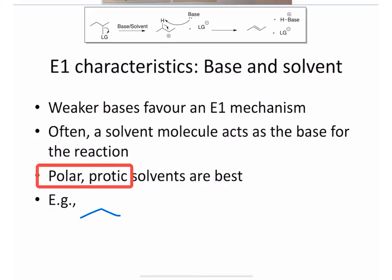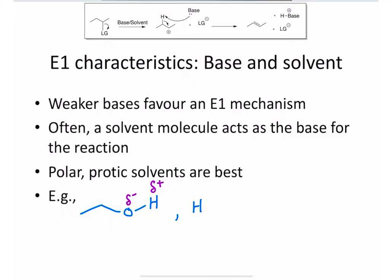Polar protic solvents are the best, so an example might be ethanol. This is a polar molecule with an overall dipole toward the electronegative oxygen atom. Protic means there is a proton on the electronegative atom, or rather, a fairly acidic proton. Here we have an ethanol proton on the electronegative atom, so this is a polar protic solvent. Ethanol is one example, water is another example.